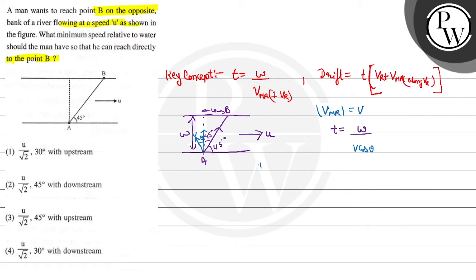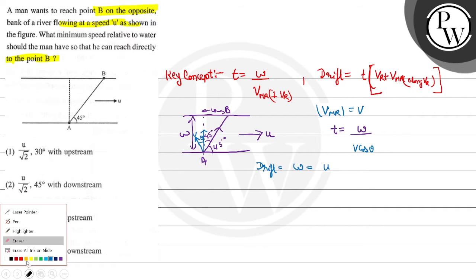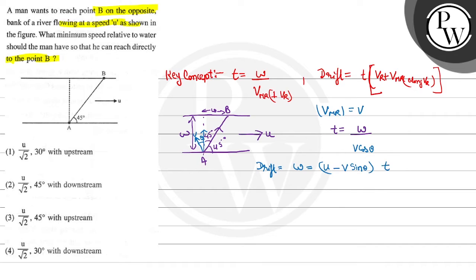If we talk about drift, the value of drift will be equal to W. Because in drift at 45 degrees angle, the speed is U minus V sin theta into time t.